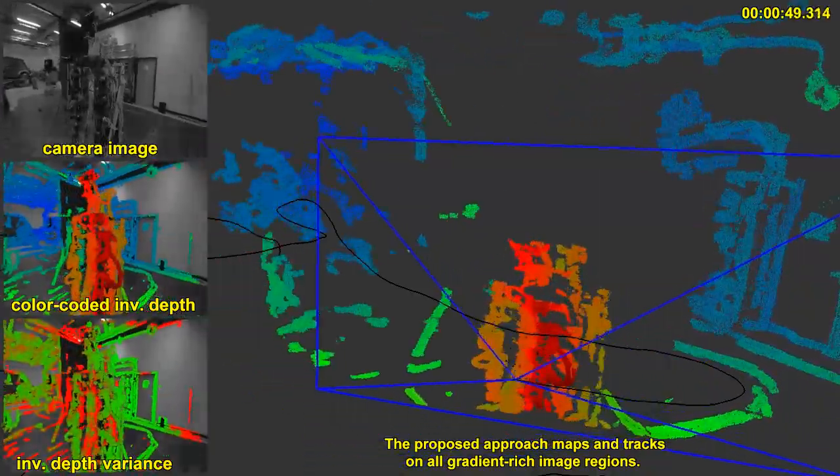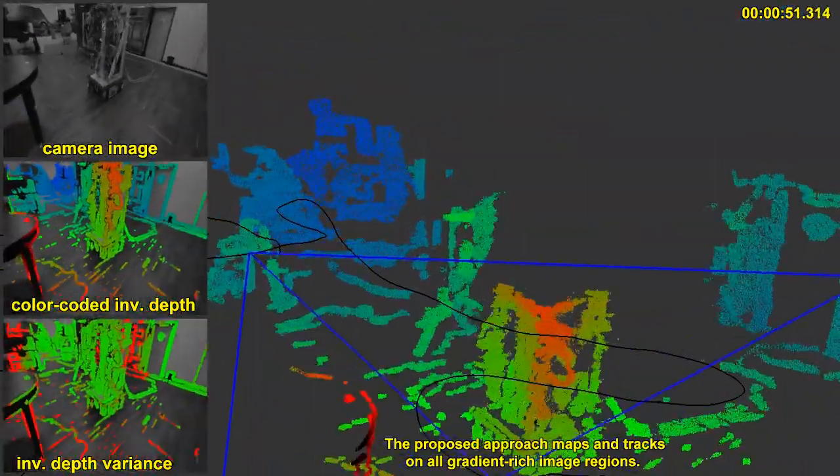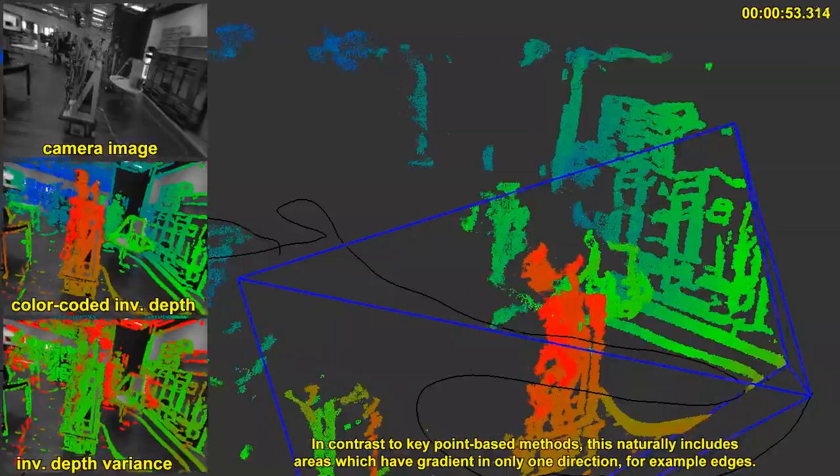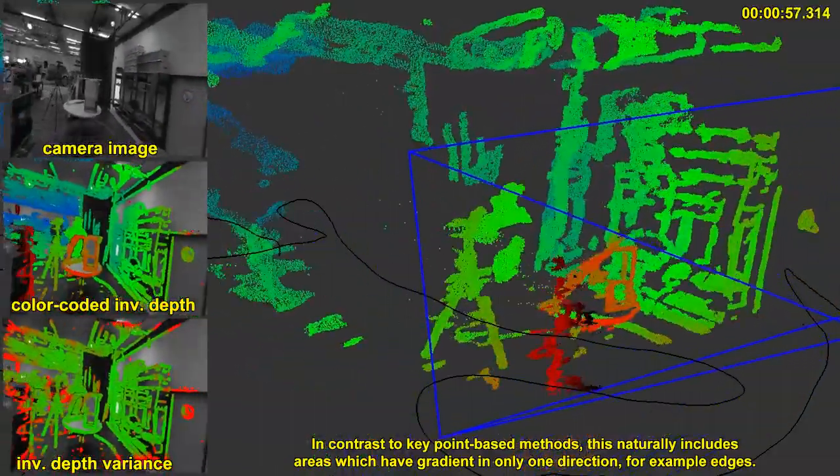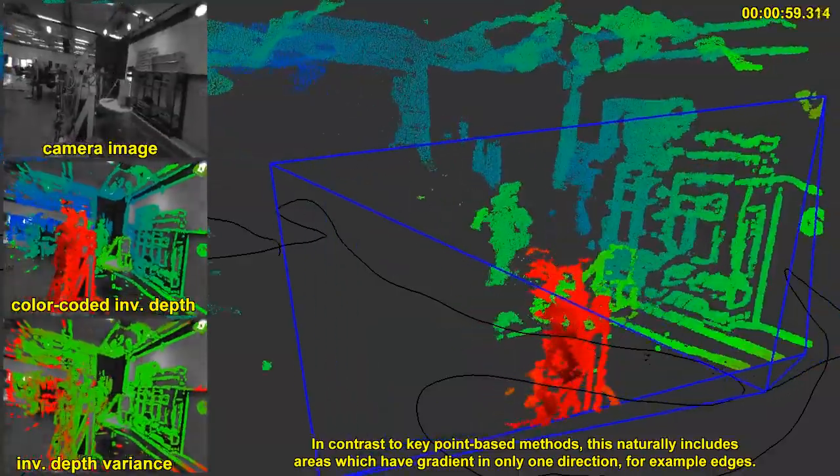The proposed approach maps and tracks on all gradient-rich image regions. In contrast to keypoint-based methods, this naturally includes areas which have gradient in only one direction, for example edges.